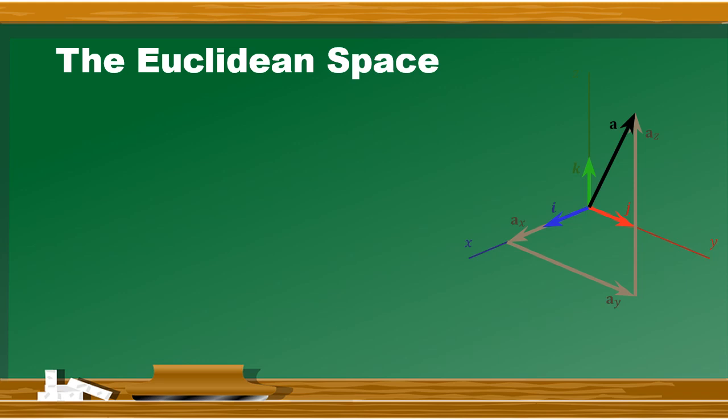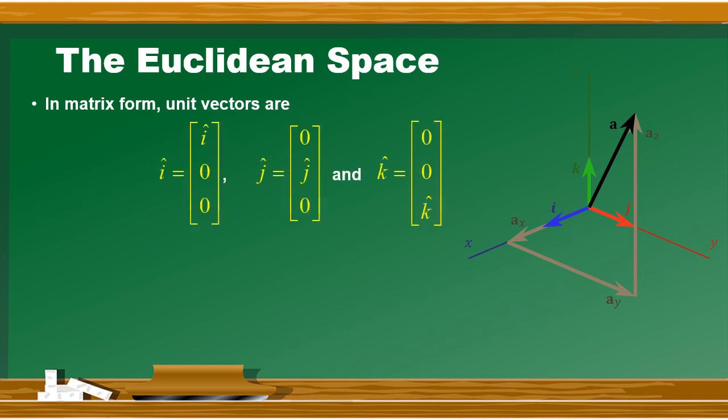Throughout quantum mechanics, we will study two different formalisms, one of which is vector mechanics. These unit vectors can also be written in matrix form. The i unit vector is written as [i, 0, 0], j as [0, j, 0], and k as [0, 0, k].